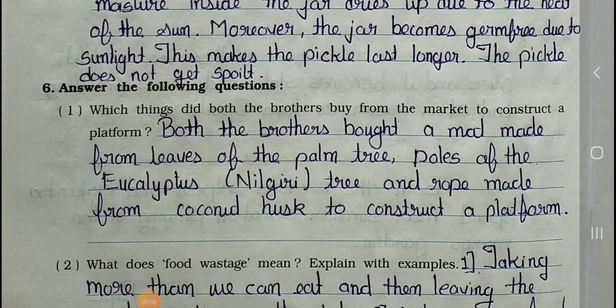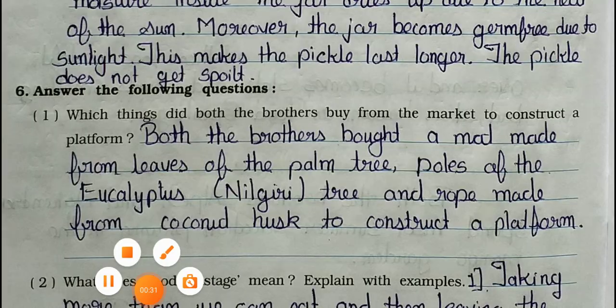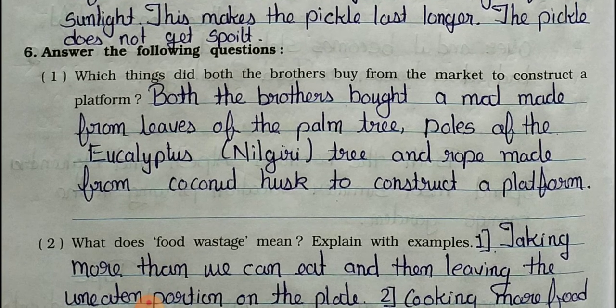Hello students, I hope you all are fine. Today we'll see the fifth standard Looking Around environmental book, Chapter 4: Mangoes Round the Year. In the previous video we covered the first part; today we will see the second part of this chapter. We start from question number six, as we completed up to question number five in the previous video.